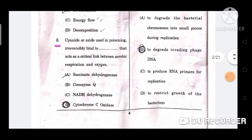Question number 6: Cyanide or azide used in poisoning irreversibly binds to -- that acts as a critical link between aerobic respiration and oxygen. The correct answer is option D, cytochrome C oxidase.